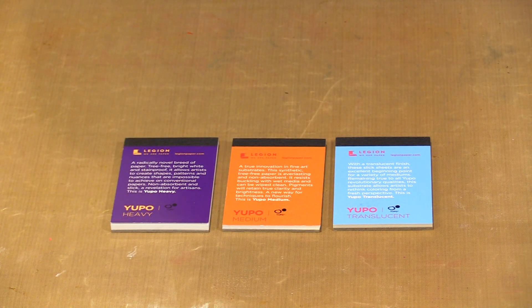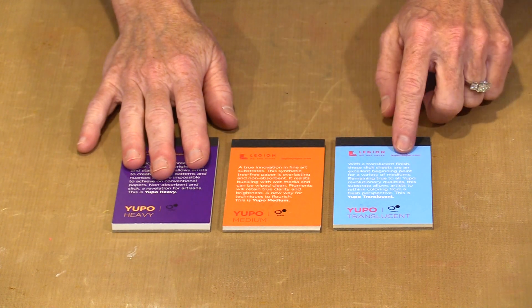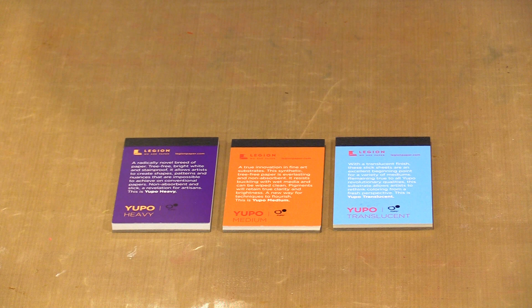The number of pages is going to vary depending on the weight. The heavy and the medium both have 10 sheets and the translucent has 15.